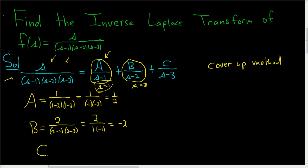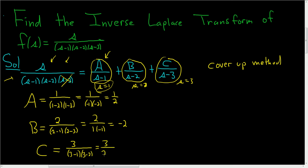Let's find C. Here's C right over here. What makes the bottom 0? Well, S equals 3. So you cover up the S minus 3, and plug in 3 everywhere else. So you get 3 over 3 minus 1, and then 3 minus 2. 3 minus 1 is 2, and 3 minus 2 is 1. So we end up with 3 halves. That's called the cover-up method — very powerful.